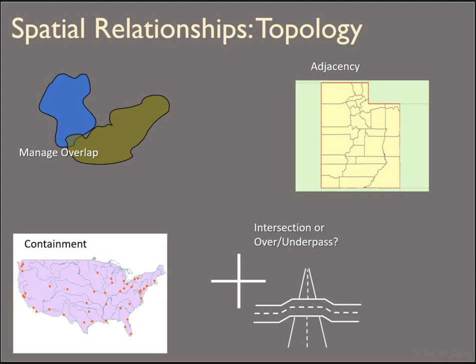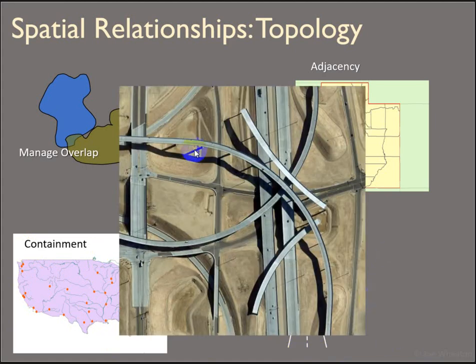The last thing about vector data that's pretty cool is that we can store rules about how data relates to each other — it's called topology. We can manage overlap: if you have a polygon mapping trees and a polygon mapping lakes, they can't overlap each other. You can set rules saying two features can't overlap and need to share a coincident boundary — same with adjacency issues like property lines or state boundaries. You can also set rules about features being inside other things, or that two roads don't actually connect — one is an overpass and one is an underpass.